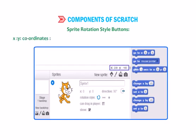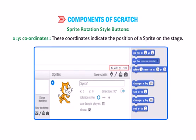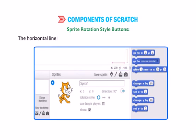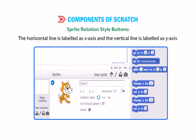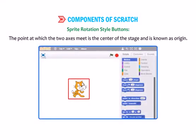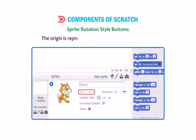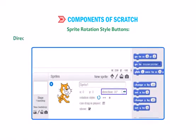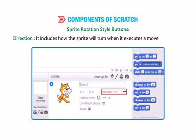XY Coordinates indicate the position of a sprite on the stage. The horizontal line is labeled as the X-axis and the vertical line is labeled as the Y-axis. The point at which the two axes meet is the center of the stage, known as the Origin. The origin is represented by X=0 and Y=0 coordinates. Direction determines how the sprite will turn when it executes a move instruction.